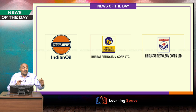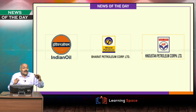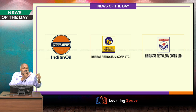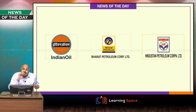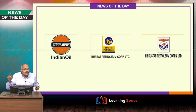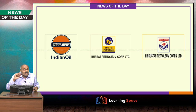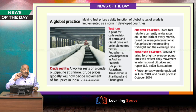The first reason is we are dependent on imports for almost 70 to 80 percent of our petroleum needs. Global market prices are totally volatile — they change depending on demand, supply, and regional factors. Our currency is also not stable, its value will change. Because of these two reasons, prices are adjusted once in 15 days. Now, on an experimental basis, they are going to introduce daily revision of petroleum and diesel prices.